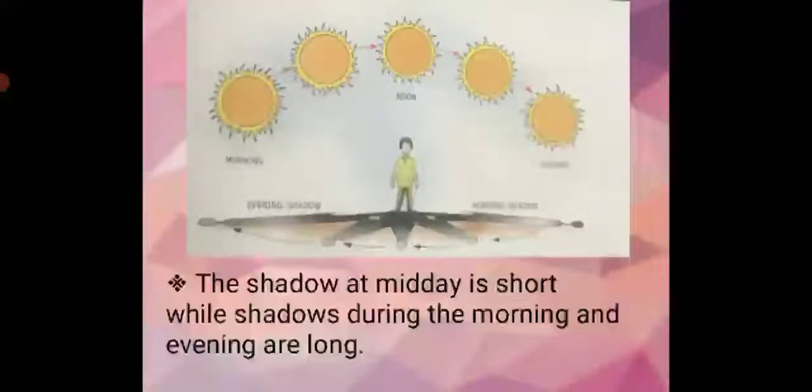Students, the shadow at midday is short, while shadows during the morning and evening are long. So you can see in the morning the sun is just rising, and when the sun is just above our head during noon time, our shadow will be short. And also when the sun is going to set, at that time our shadow will be long.